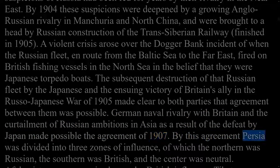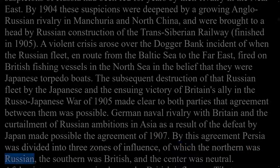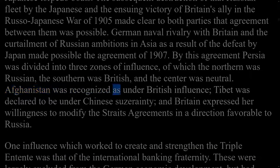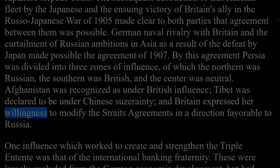German naval rivalry with Britain and the curtailment of Russian ambitions in Asia as a result of defeat by Japan made possible the agreement of 1907. By this agreement Persia was divided into three zones of influence — the northern Russian, the southern British, and the center neutral. Afghanistan was recognized as under British influence, Tibet was declared under Chinese suzerainty, and Britain expressed willingness to modify the Straits agreements in a direction favorable to Russia.